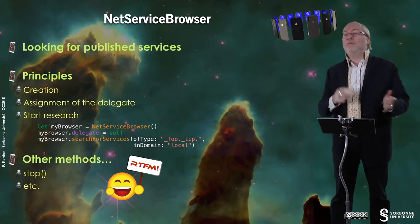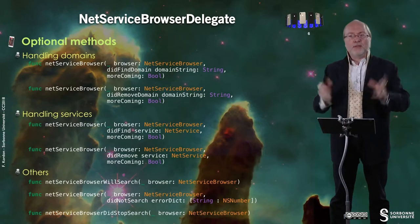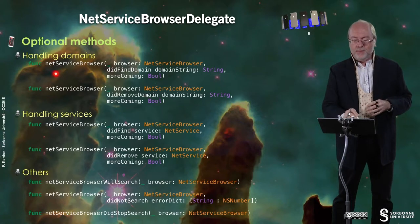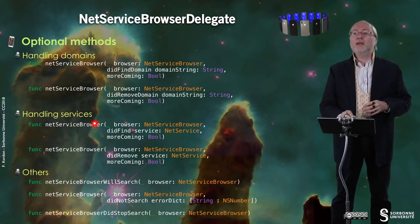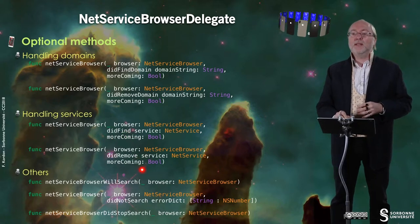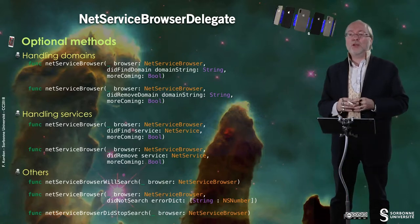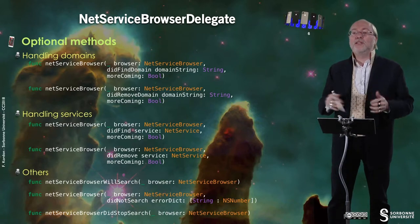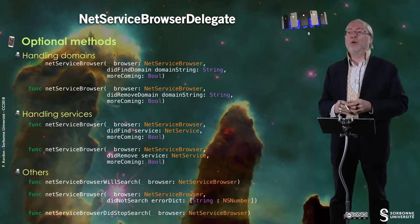There are other methods — stop, et cetera — for which you can go to the fantastic manual. Once my browser has started, it will inform me through the NetServiceBrowserDelegate protocol, with a set of optional methods: it found the domain or the domain was removed; it found the service or the service was removed; NetServiceBrowser will search — so it will start the search; did not search with an error; or did stop search, mentioning the end of the browse.